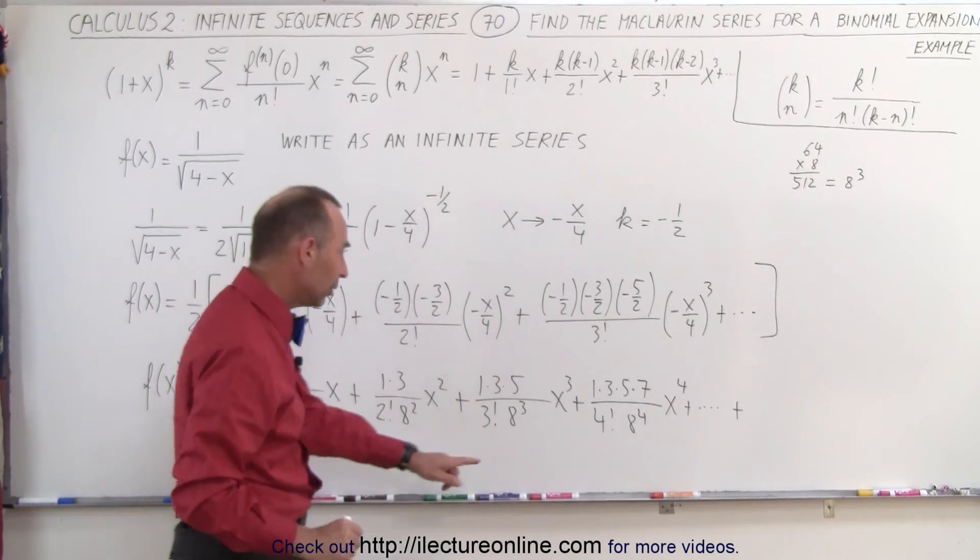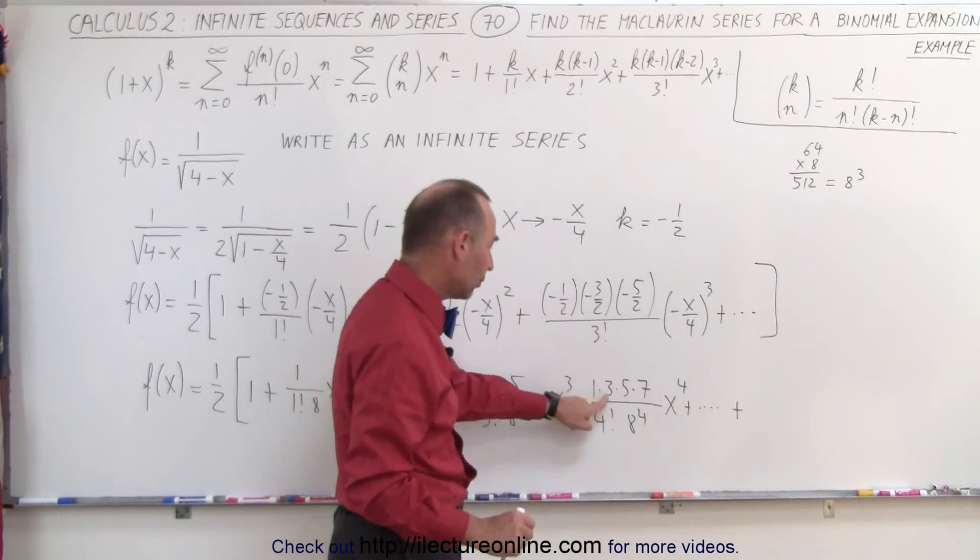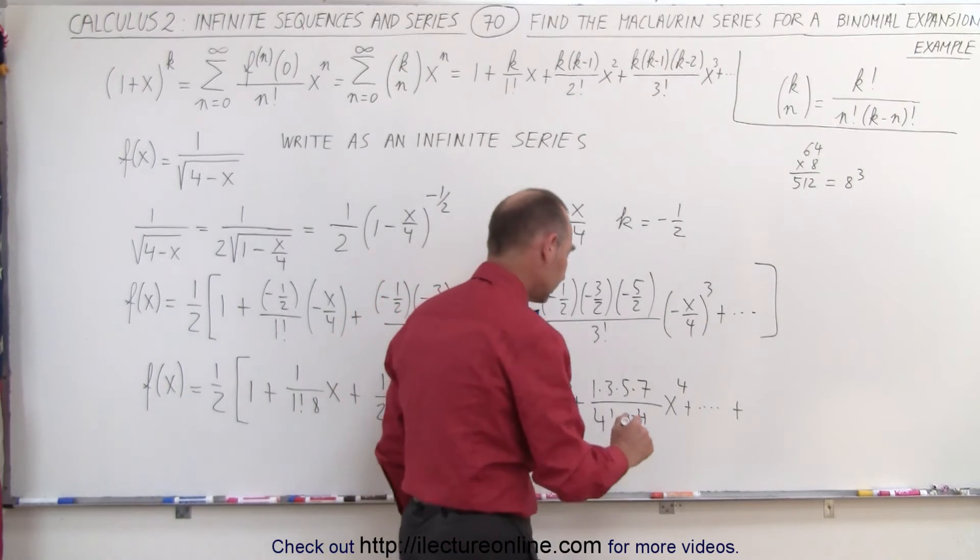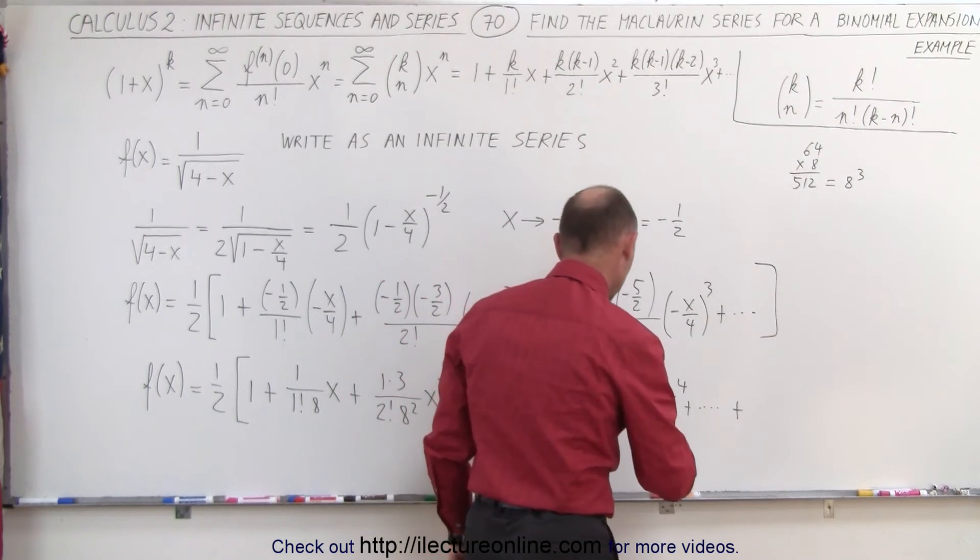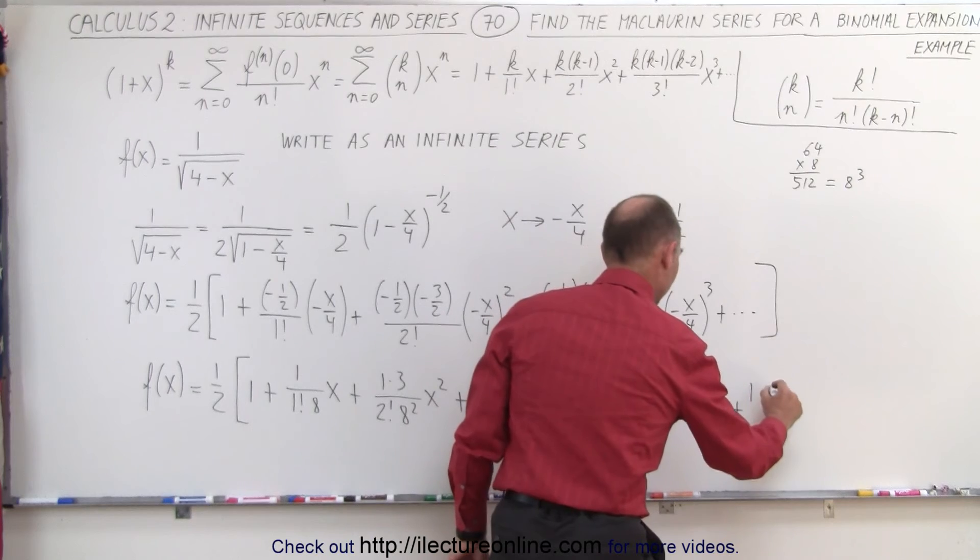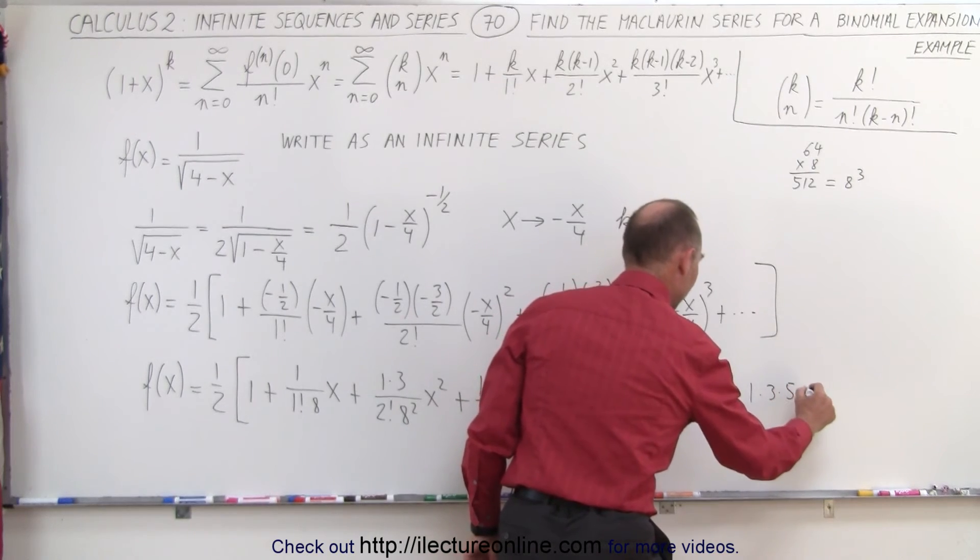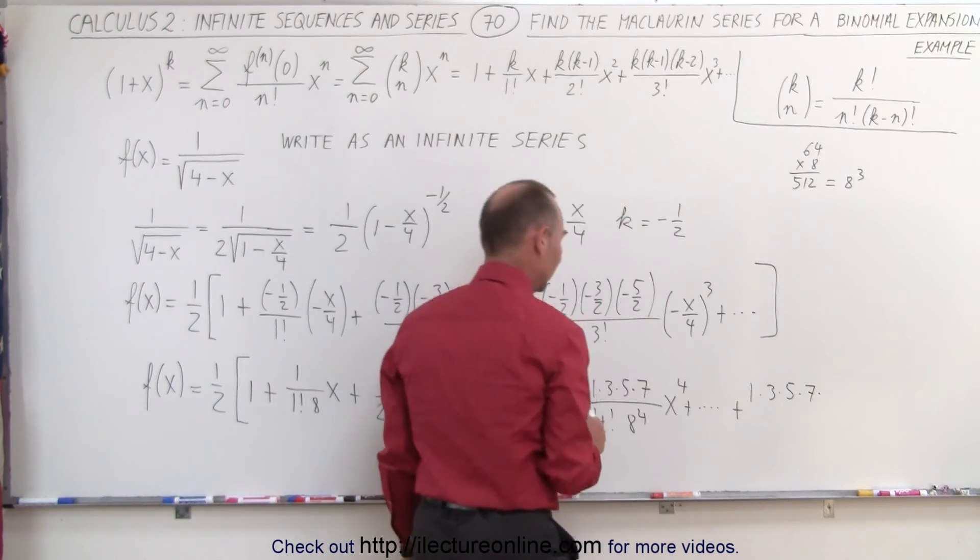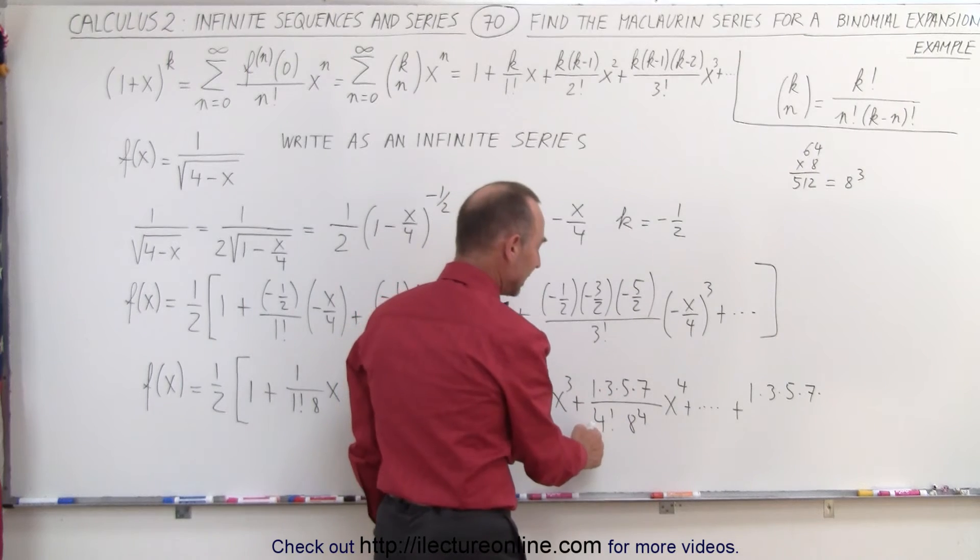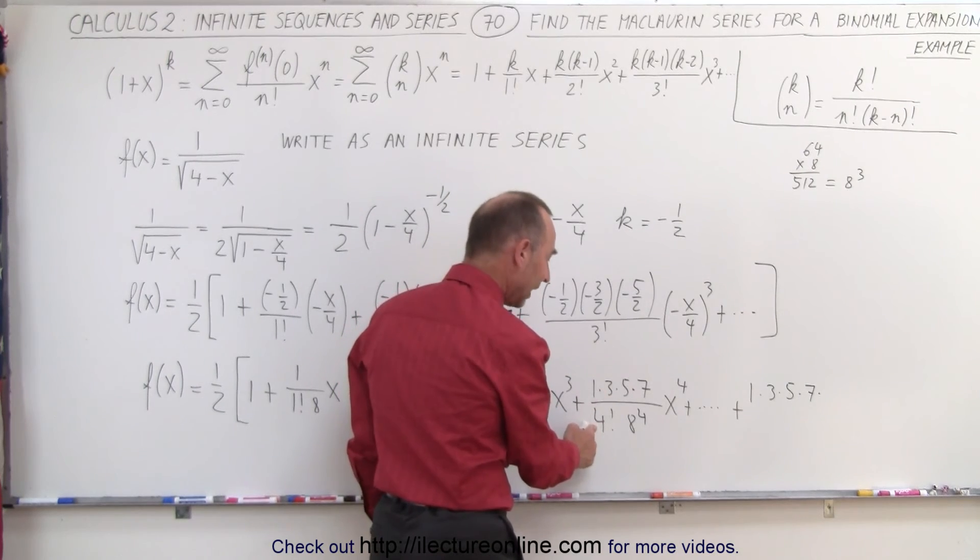Plus, in the numerator notice when n is equal to 4 we have 1, 3, 5, 7. So that can be written as 1 times 3 times 5 times 7 times, and the last term will be 2n minus 1 as the final number in the numerator that we're multiplying with.